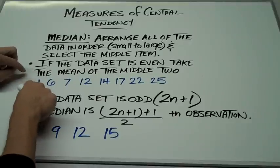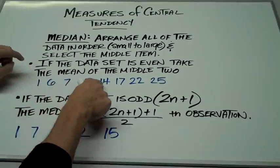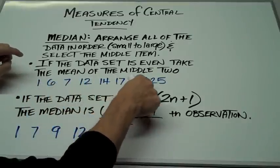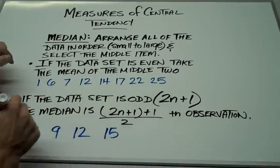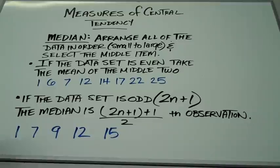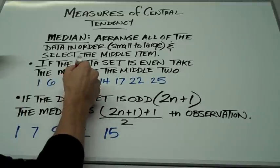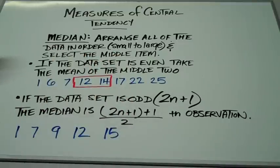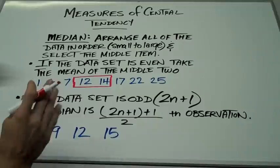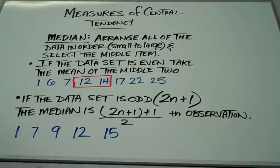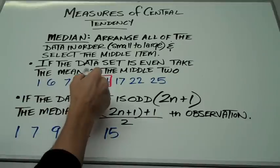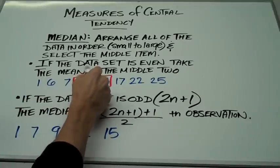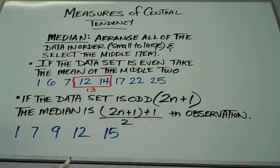For example, I have 1, 2, 3, 4, 5, 6, 7, 8 entries here. So my 4th and my 5th entries — I'm going to take the mean of those two. 12 plus 14 divided by 2 will give me 13, which is my median.